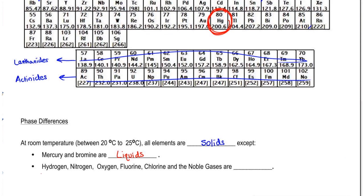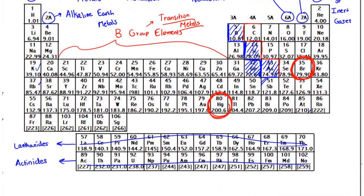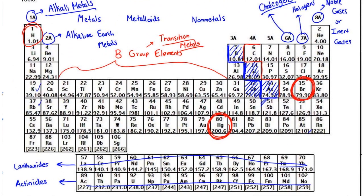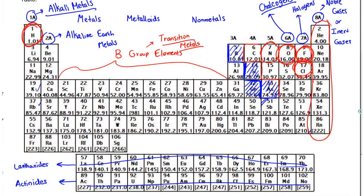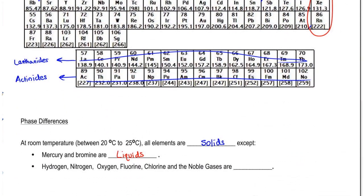And then we're going to say hydrogen, which is right here. So hydrogen, nitrogen, oxygen, fluorine, chlorine and the noble gases - these guys here. These guys don't exist as solids either. They exist as gases at room temperature.